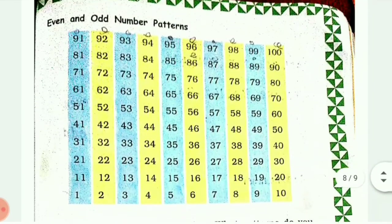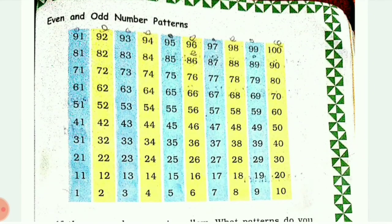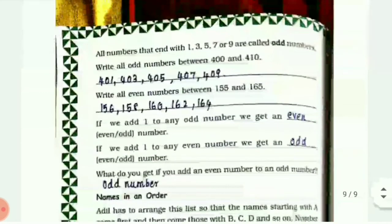In the blue color, the first column ends with 1, the second column ends with 3, the third column ends with 5, then 7, then 9. In the same way the yellow color repeats, ending with 2, 4, 6, 8, and 0.